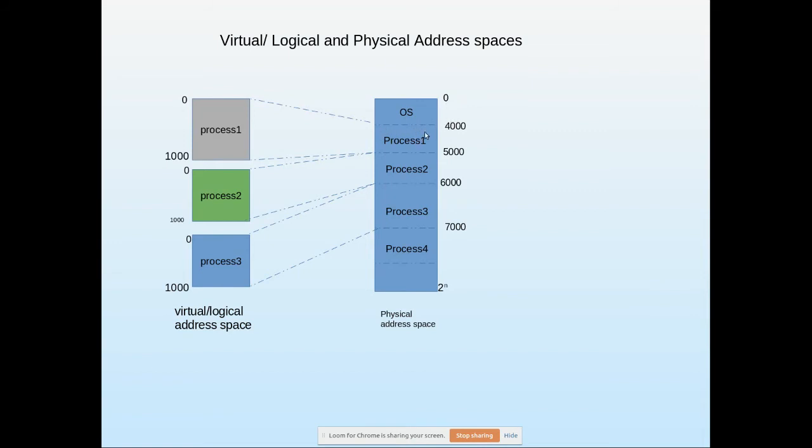After the operating system is loaded, when we start executing, process one will be loaded into the main memory after the operating system. Since it is thousand lines, it occupies from 4000 to 5000, then process two from 5000 to 6000, then process three from 6000 to 7000. When it is loaded into the main memory, the address is different.